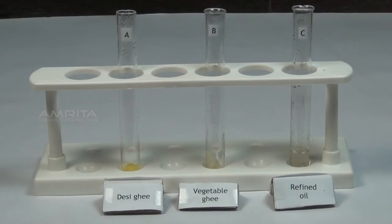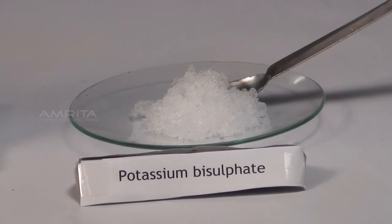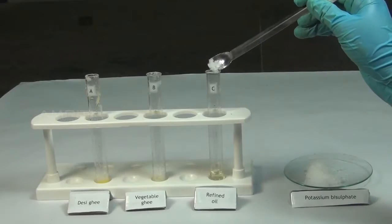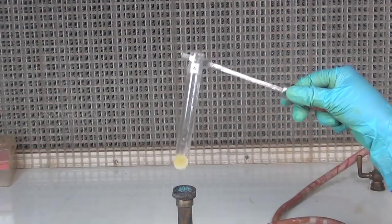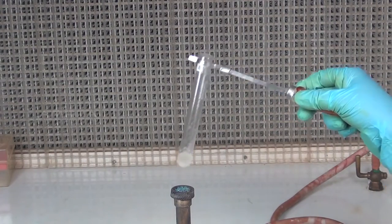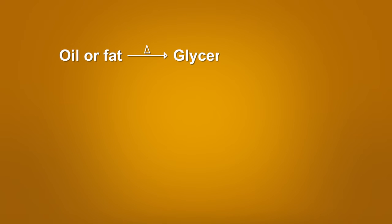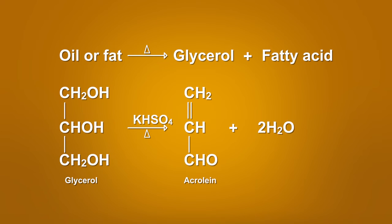Acrolein Test. Take a small quantity of desi ghee, vegetable ghee and refined oil in three test tubes A, B and C respectively. Using a spatula, add a small quantity of potassium bisulphate crystals into each test tube and heat over a Bunsen burner. When oil or fat is heated strongly in the presence of a dehydrating agent like potassium bisulphate, the glycerol portion of the molecule is dehydrated to form an unsaturated aldehyde, acrolein, which has a pungent, irritating odour.